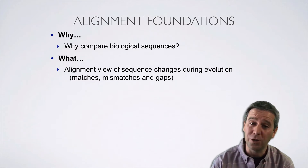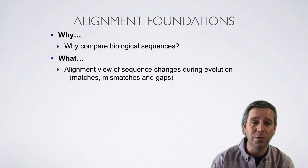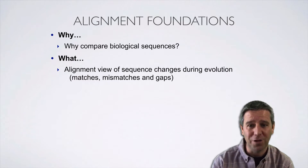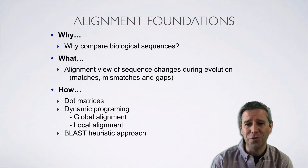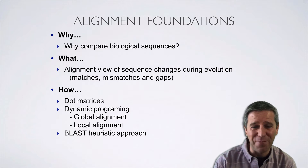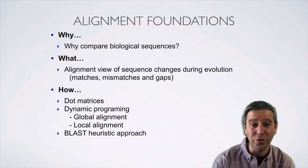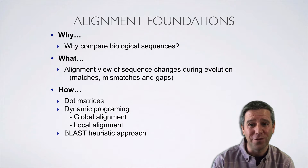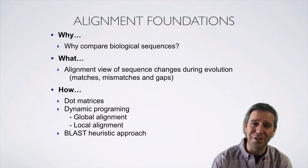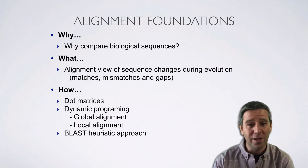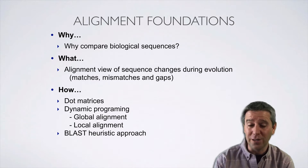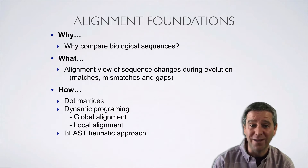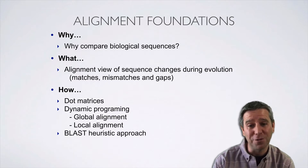We'll discuss what these terms mean — particularly matches, mismatches, and gaps — in the context of capturing descent from a common ancestor. And then finally, we'll spend the lion's share of our time here flipping the hood to see how these methods work and how we can get a computer to calculate these things. We'll build up our understanding starting from simpler approaches like dot plots, then progress to more complicated ones that we'll delve into deeper in subsequent videos.